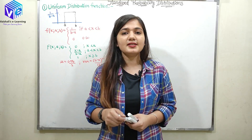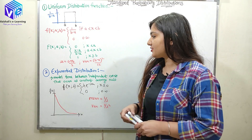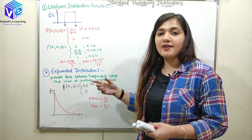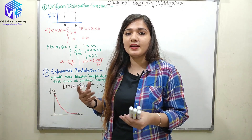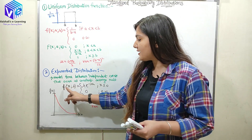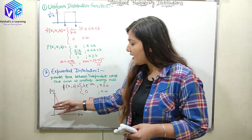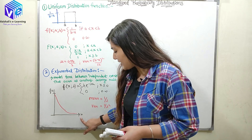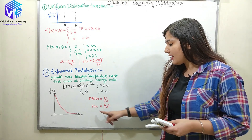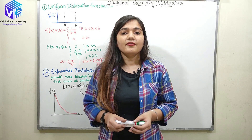Now I am going to discuss exponential distribution. Exponential distribution models the time between independent events that occur at a constant average rate. Its PDF is equal to λ·e^(−λx) when x is greater than or equal to 0, and 0 otherwise. If I draw the PDF with respect to the random variable x, the graph represents an exponential curve. Mean is equal to 1/λ and variance is equal to 1/λ². I have discussed mean and variance in detail in my previous video.